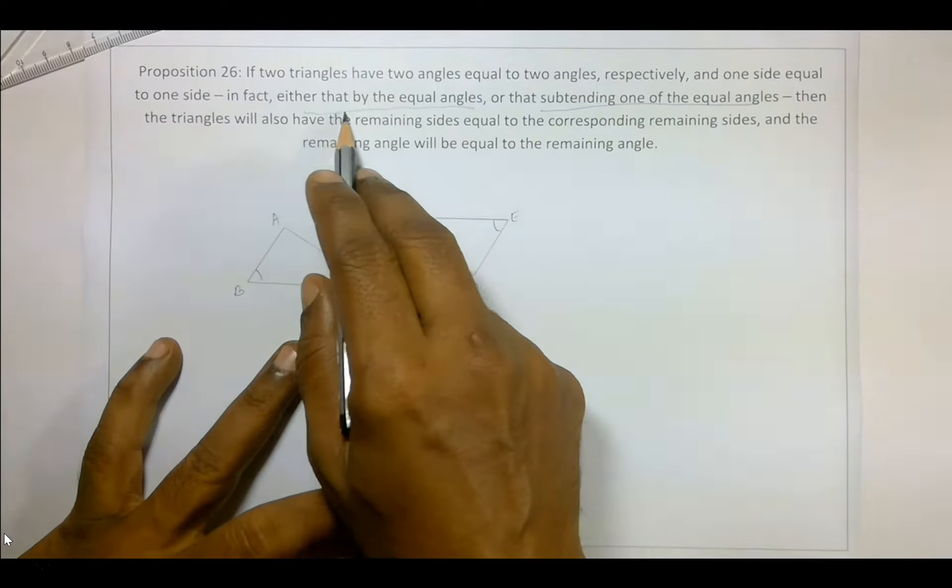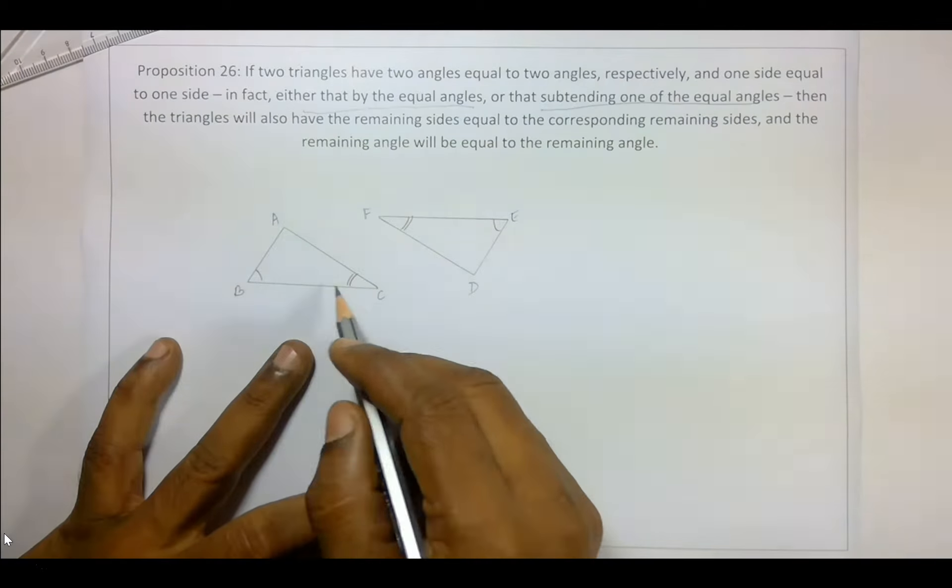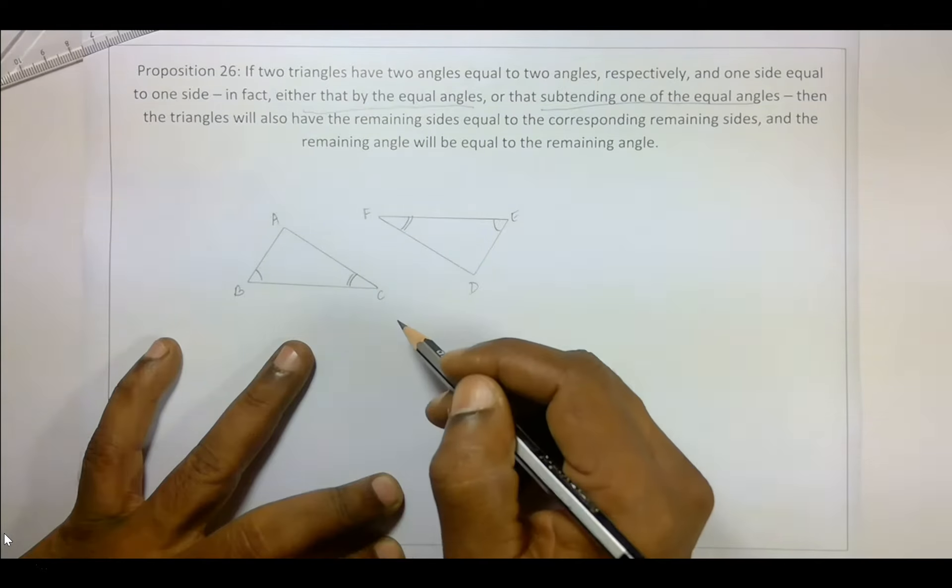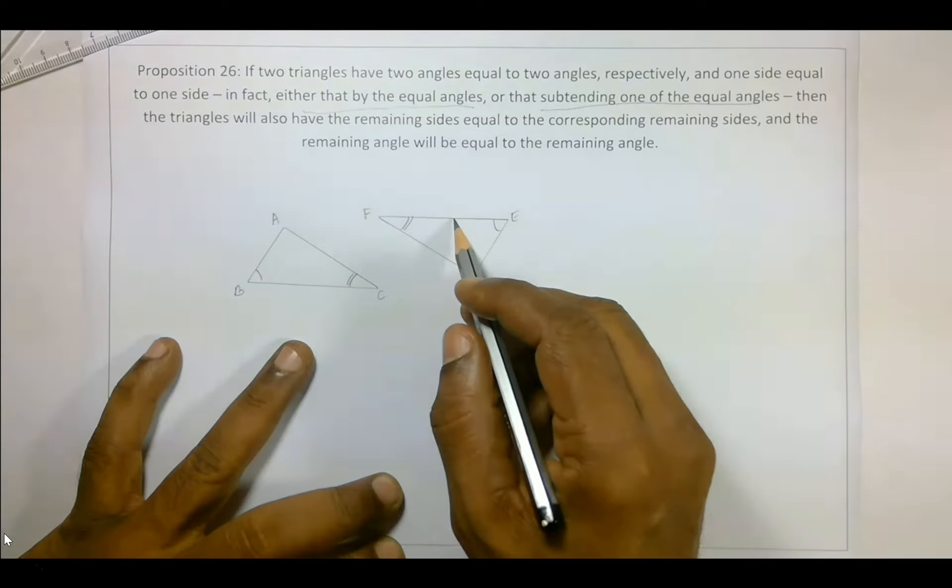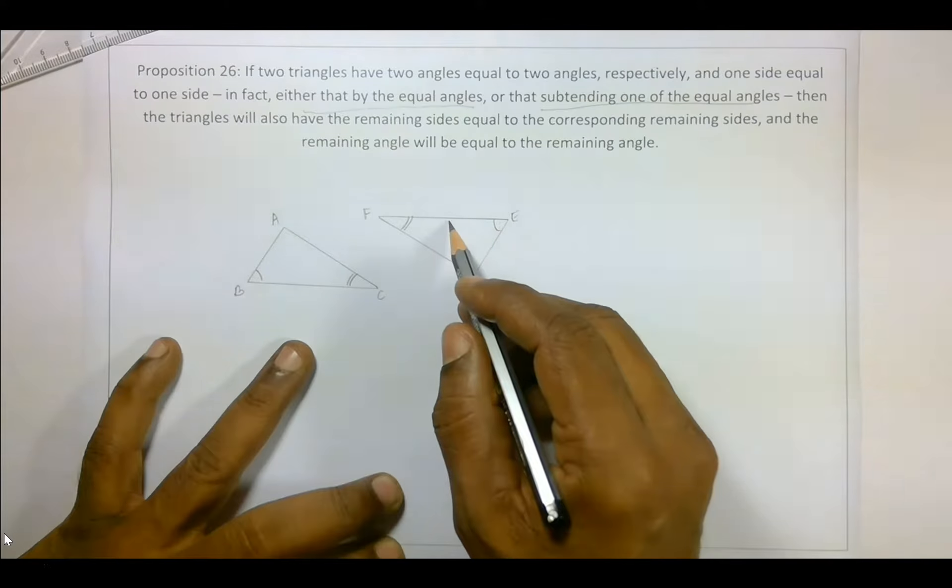Now in the previous video where we looked at this part, the side was between the equal angles. But now let's look at not the side between the angles but one of the other sides.